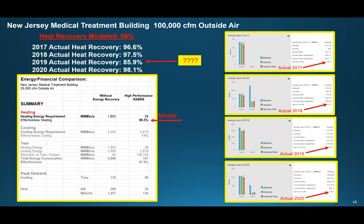And one last example — a medical treatment building in New Jersey with 100,000 CFM of outside air. The model calculated 98.5% annual heating effectiveness. Actual post-occupancy results: 2017 — 96.6%, 2018 — 97.5%, 2019 — 85.9%, and 2020 — 98.1%. In 2019 performance dropped about 10%. The archived monitoring data shows that in 2019 the supply air temperature was increased from 55 to 65 degrees, then set back to 55 in 2020 — explaining the decrease. The model was run at a supply air temperature of 55 degrees.